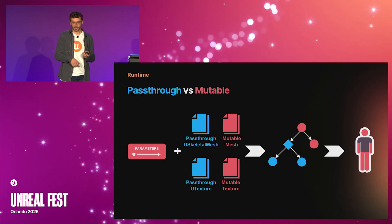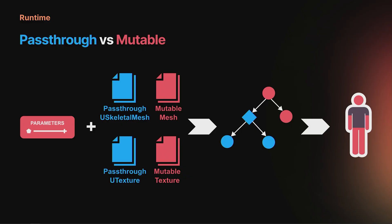But compiling meshes and textures has an overhead. Mutable also allows you to not compile them into its own format and use skeletal meshes and textures directly. This mode is called pass-through, and Mutable only allows you to switch between pass-through meshes and textures — no other operations are allowed.